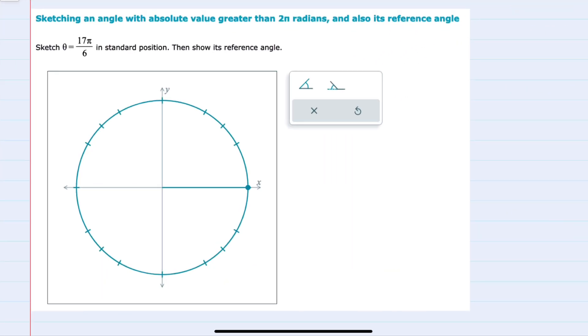In this example we're asked to sketch theta equals 17π/6 and to also show its reference angle. I'll start by realizing that this theta 17π/6 is greater than 2π.